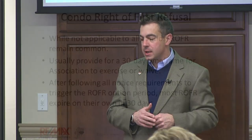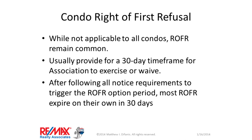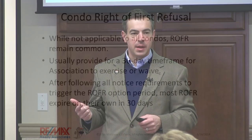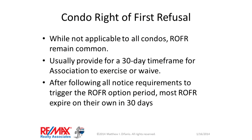These provisions usually provide for a 30-day time frame for the association either to exercise the right or to waive it. We never ever see associations exercise the right — they don't have the money, and even if they did, they'd expose themselves to liability if someone claims they were discriminated against on the basis of a protected class. Even though in reality you'll often see a responsive association get you the waiver quickly, almost always those rights of first refusal will have a 30-day period during which they are allowed to run — meaning it takes 30 days before it shall be deemed waived automatically, after you've undertaken all required notice procedures.